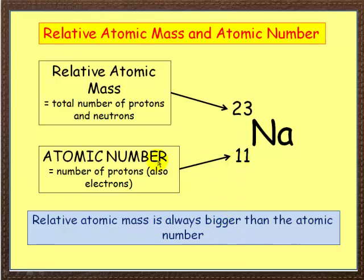So here this smaller one is the atomic number and this tells us how many protons we've got and also how many electrons we've got. The relative atomic mass, which is always the bigger number, is a way of calculating the neutrons. So it's the total number of protons and neutrons in the nucleus added together.